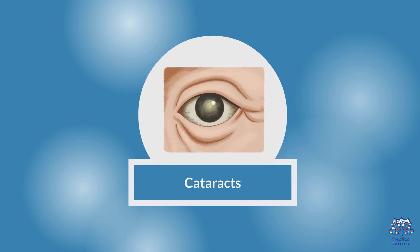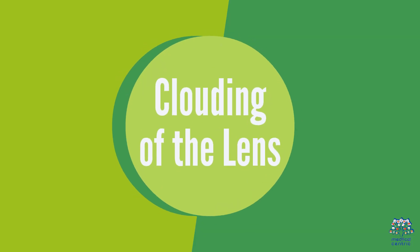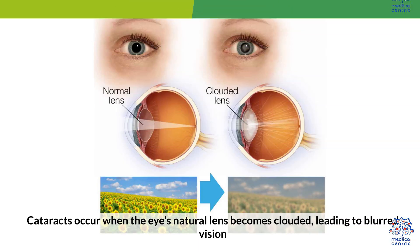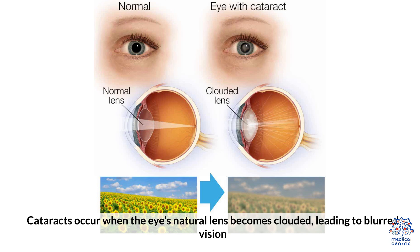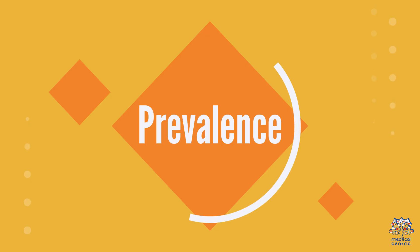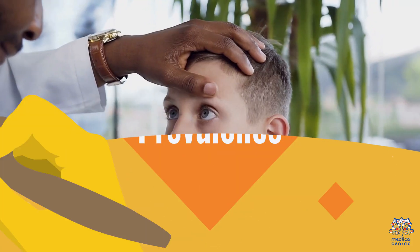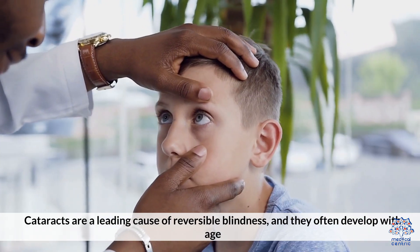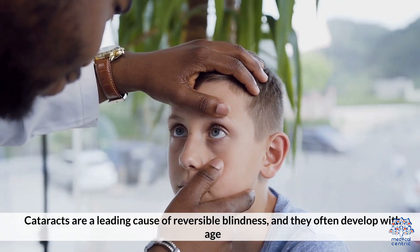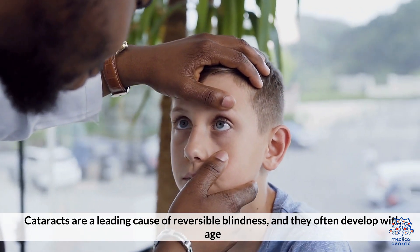1. Cataracts — Clouding of the Lens. Cataracts occur when the eye's natural lens becomes clouded, leading to blurred vision. Cataracts are a leading cause of reversible blindness, and they often develop with age.